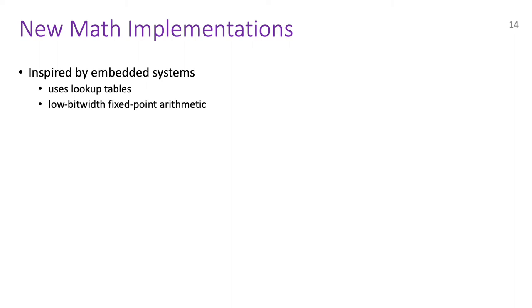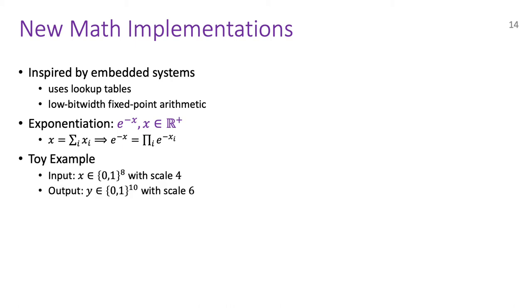Now that we know what fixed-point integers and their scales are, let's look at our math implementations which are inspired by embedded systems. In particular, we also use lookup tables to avoid performing complex operations and we use low bit width fixed-point arithmetic which is used in embedded systems to reduce memory consumption. The first functionality we look at is that for exponentiation which is defined as e to the power minus x where x is always positive. The idea here is to split x into xs of smaller bit widths, compute exponentiation on smaller xs and then multiply these results to get e to the power minus x. To understand the specifics, let's see a concrete toy example. Let's say we have an 8-bit input with scale 4 and we want a 10-bit output with scale 6.